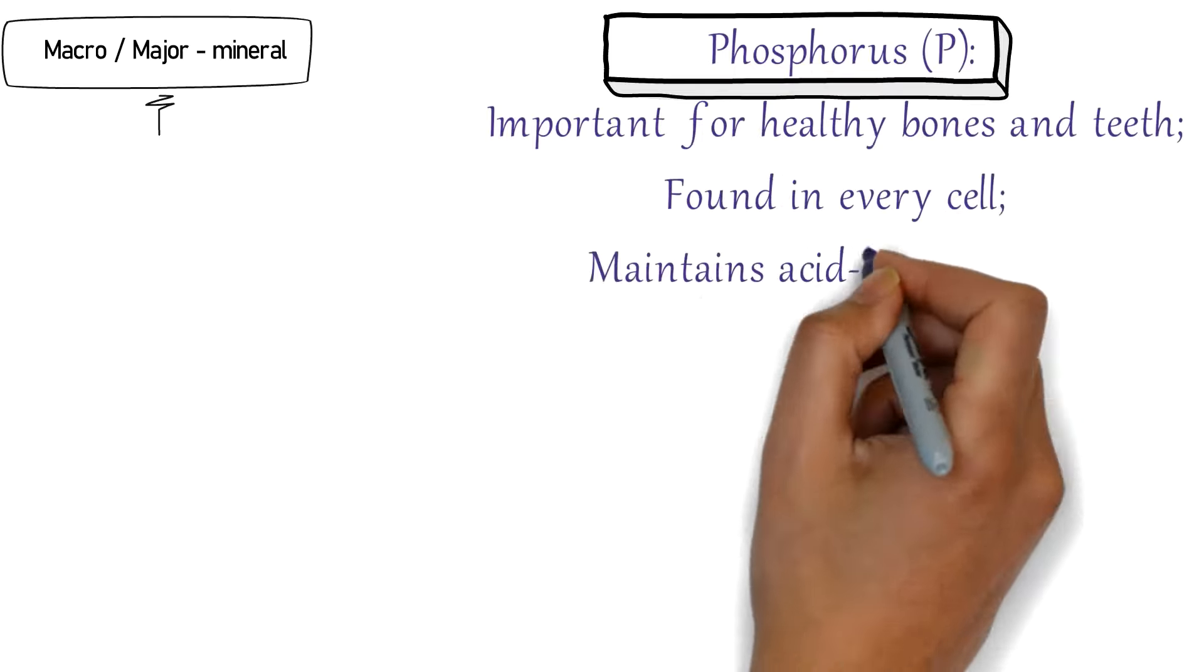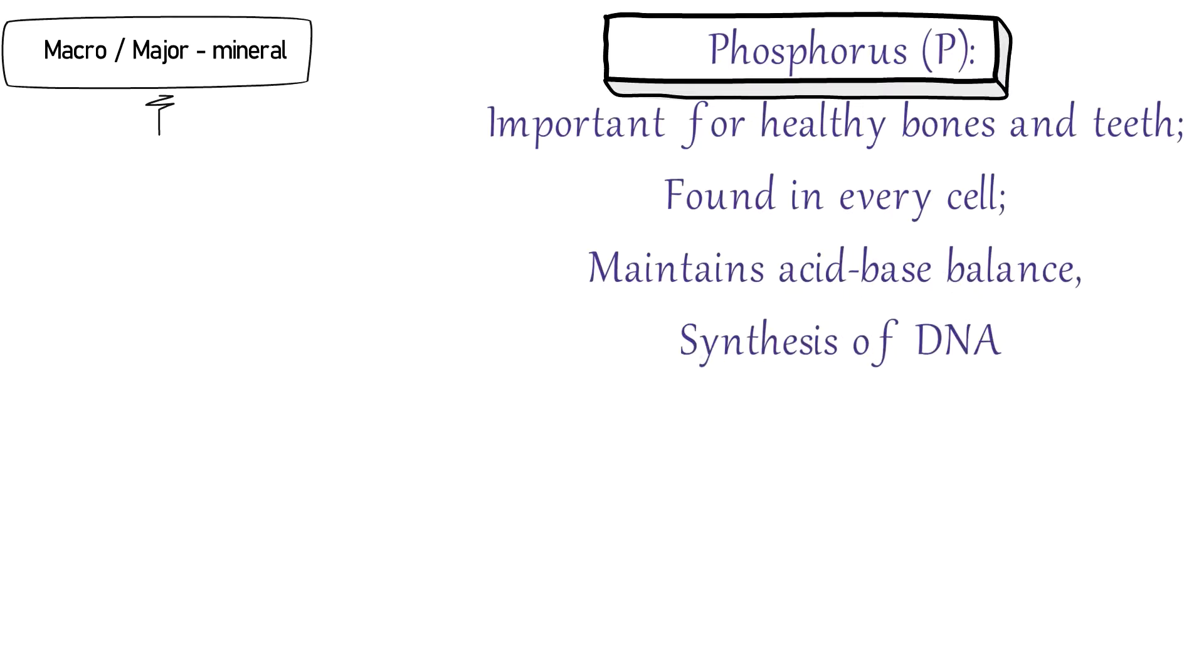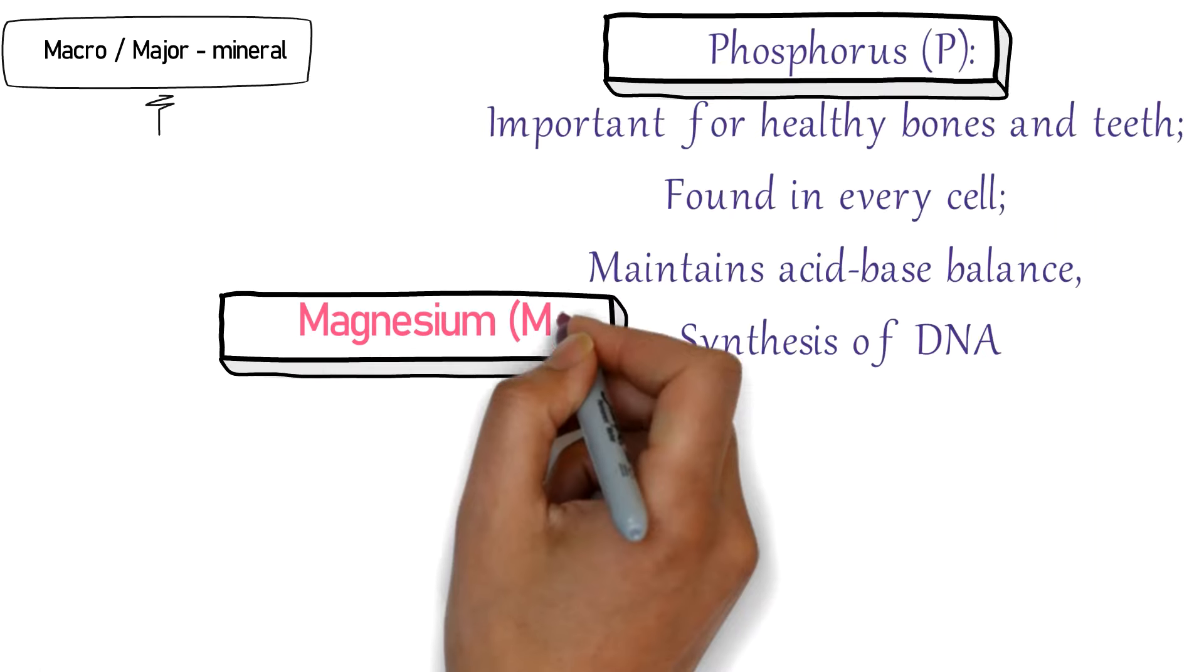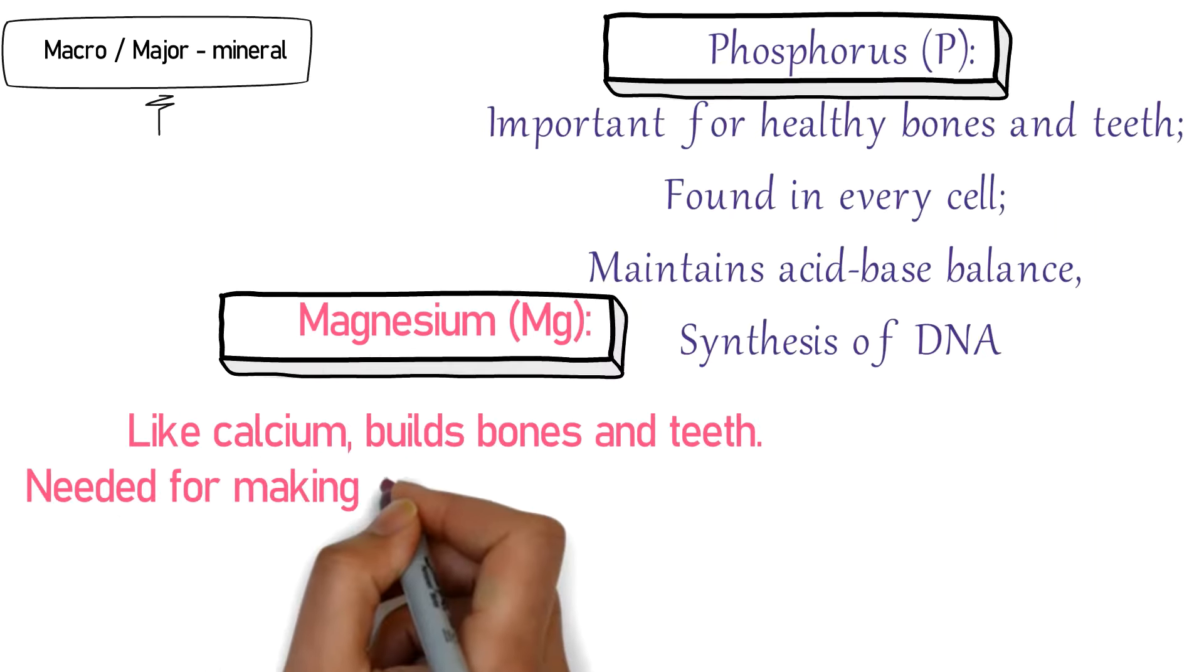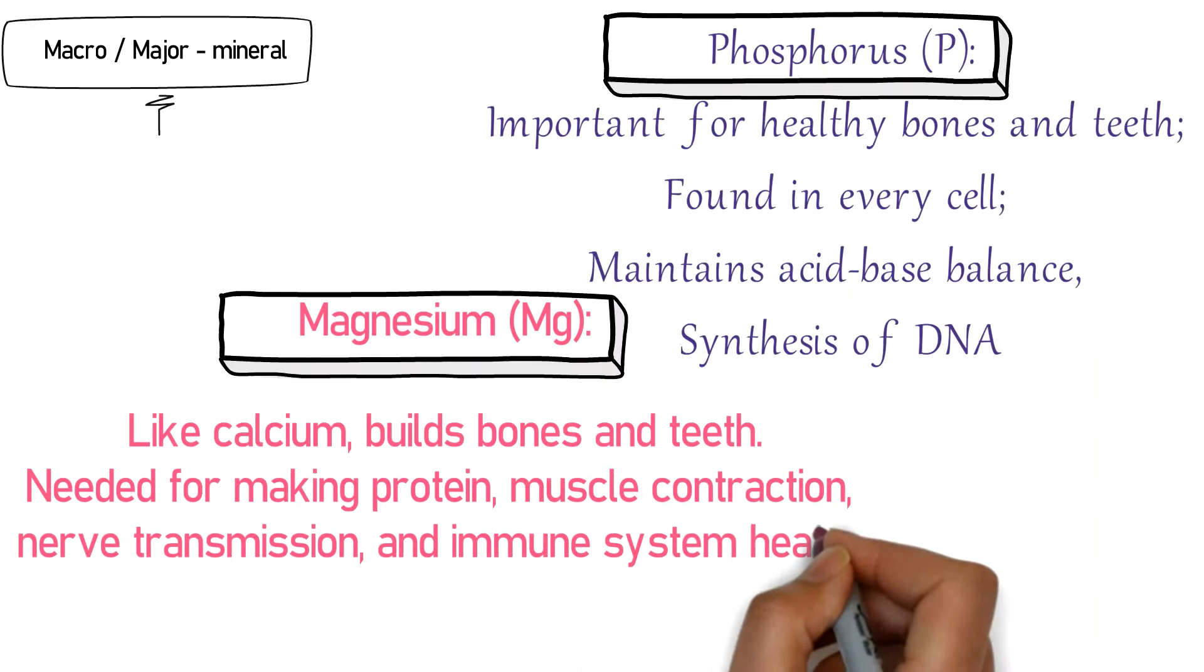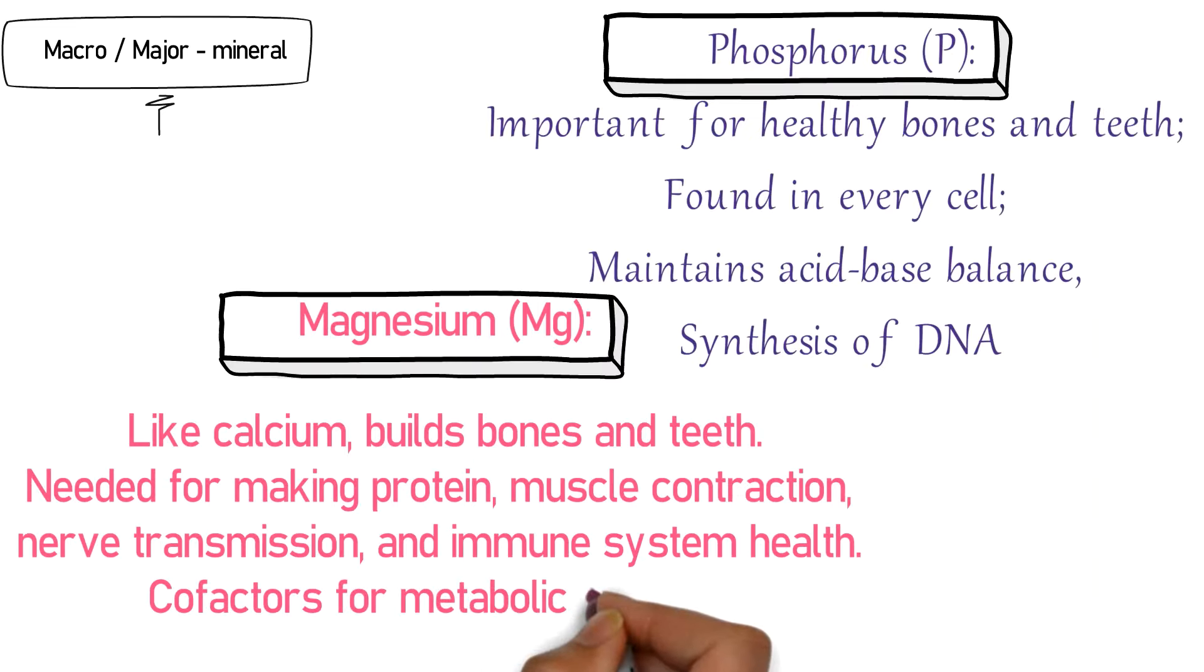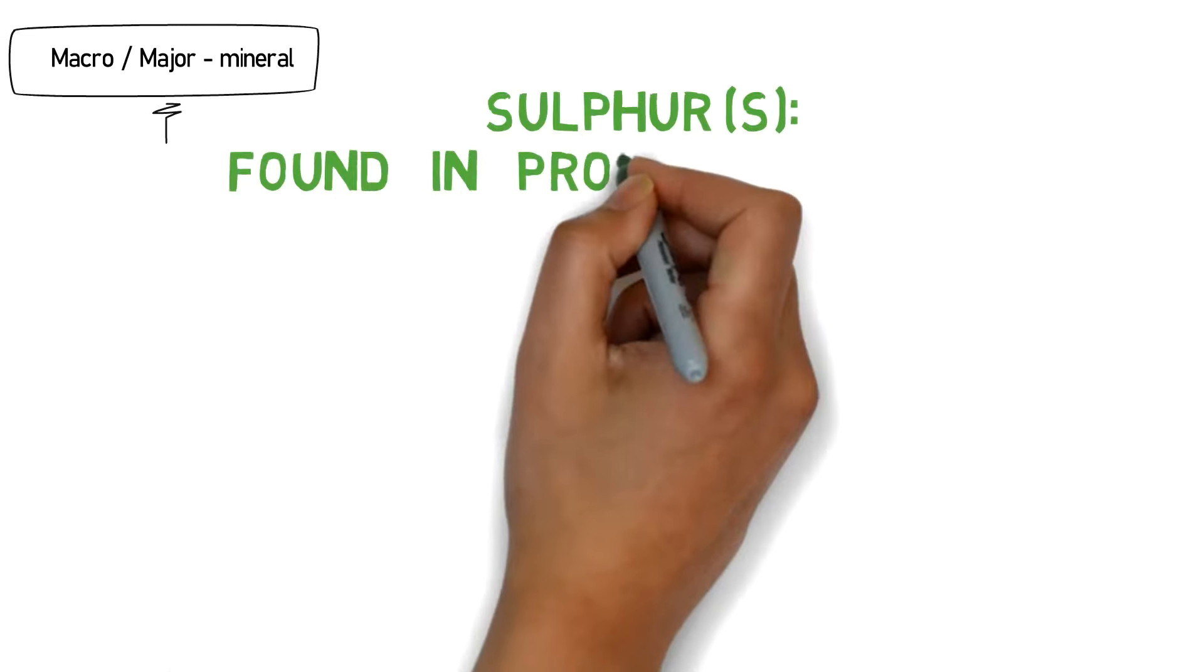Phosphorus: important for healthy bones and teeth, found in every cell, maintains acid-base balance, synthesis of DNA. Magnesium: like calcium, builds bones and teeth, needed for making protein, muscle contraction, nerve transmission and immune system health. It is a co-factor for metabolic enzymes. Sulfur: found in protein molecules.